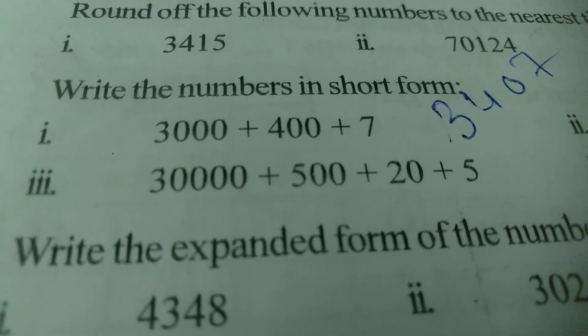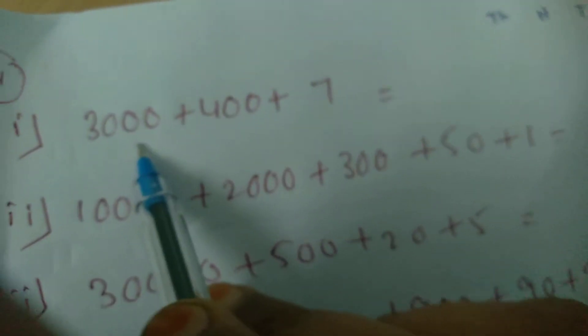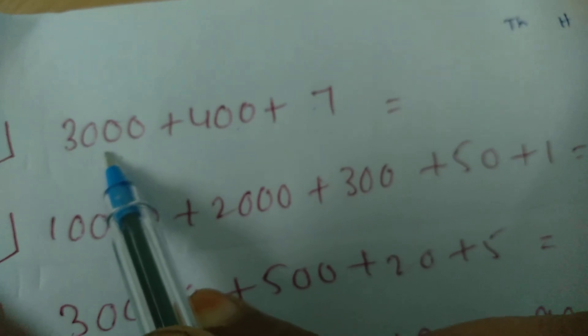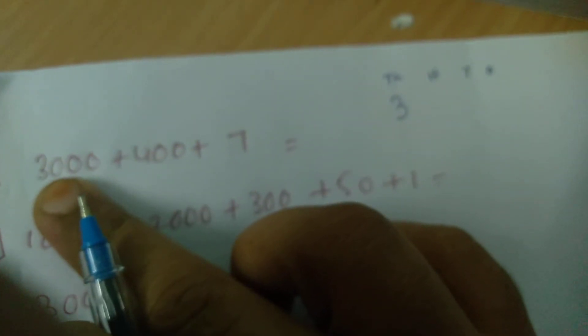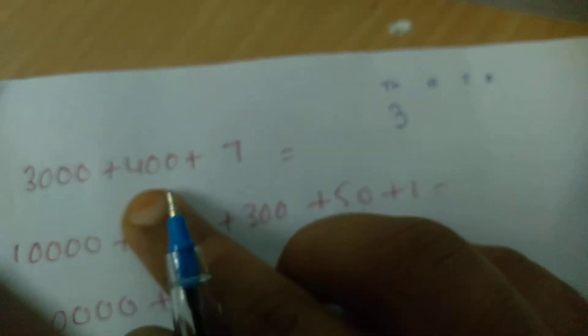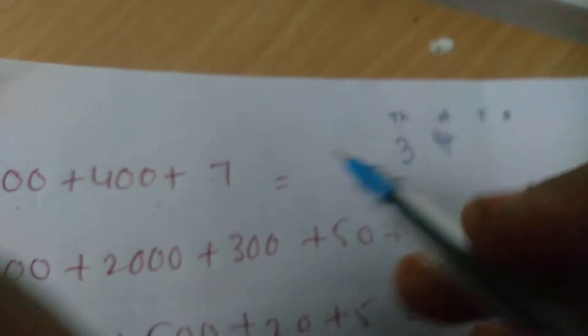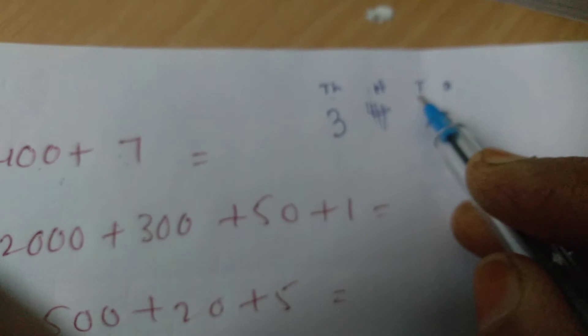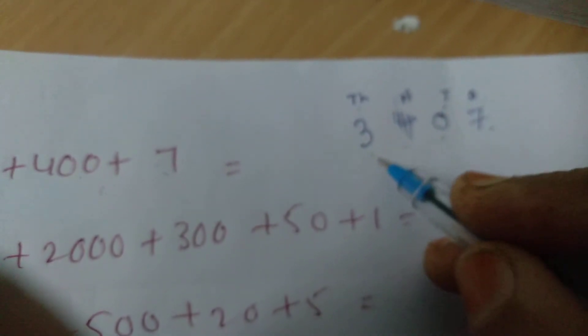So, how can we write it without any mistake? Whenever you are going to write numbers in short form, you have to write the place values. Thousands, hundreds, tens, ones. Three thousand: put 3 in the thousands place. Four hundred: put 4 in the hundreds place. No number in the tens place, so put 0. And 7 in the ones place. So the answer is 3,407.